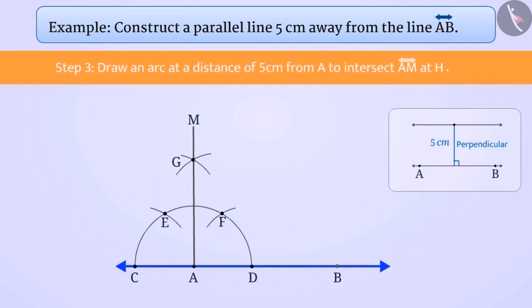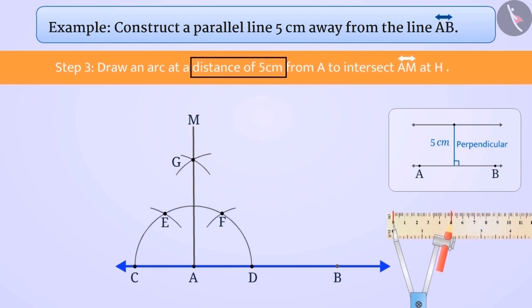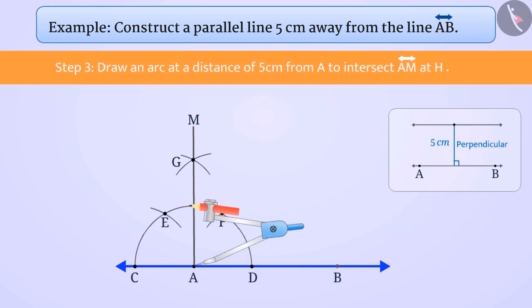Step 3: We have to draw a line at a distance of 5 cm from the line AB. So, take a distance of 5 cm in the compass and by placing the pointed end at A, draw an arc cutting M at point H.